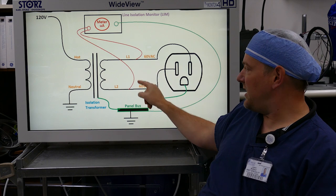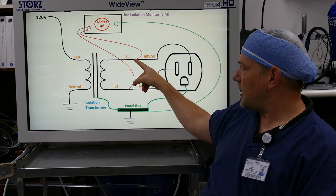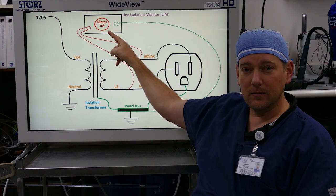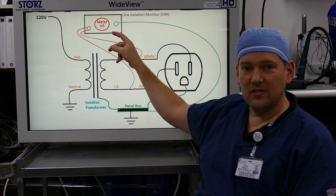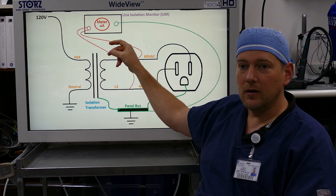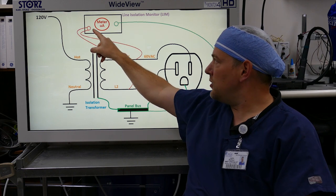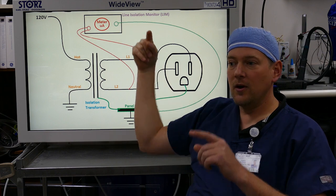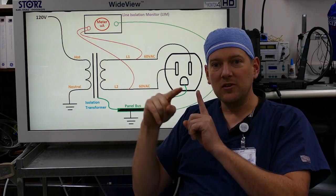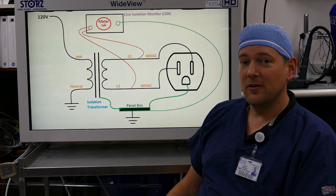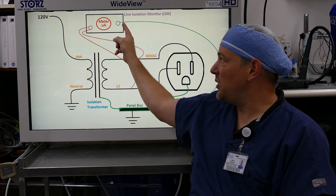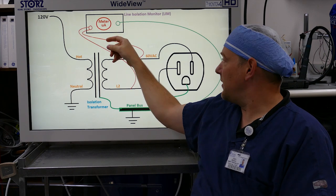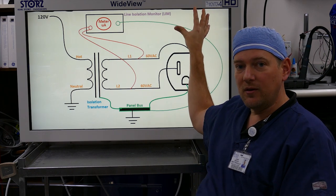So from L1 and L2 coming off the transformer you have wires that go all the way up to your meter and it's basically the same as on a multimeter on microamps or milliamps. You have on one side L1 and L2, and on the other side ground. So between those two is measuring amperage. If a current ever exceeds five milliamps between ground and L1 or L2, then your meter will alarm and it buzzes inside the operating room.